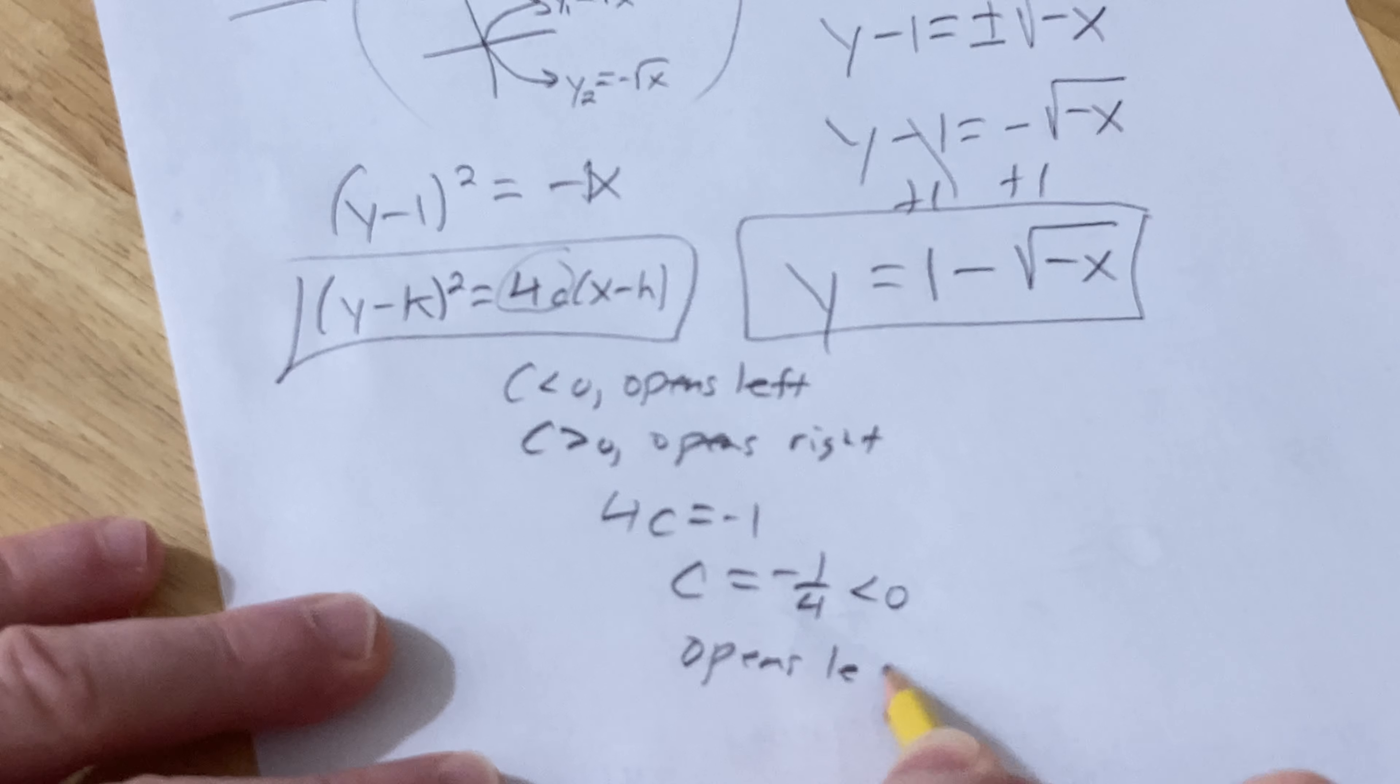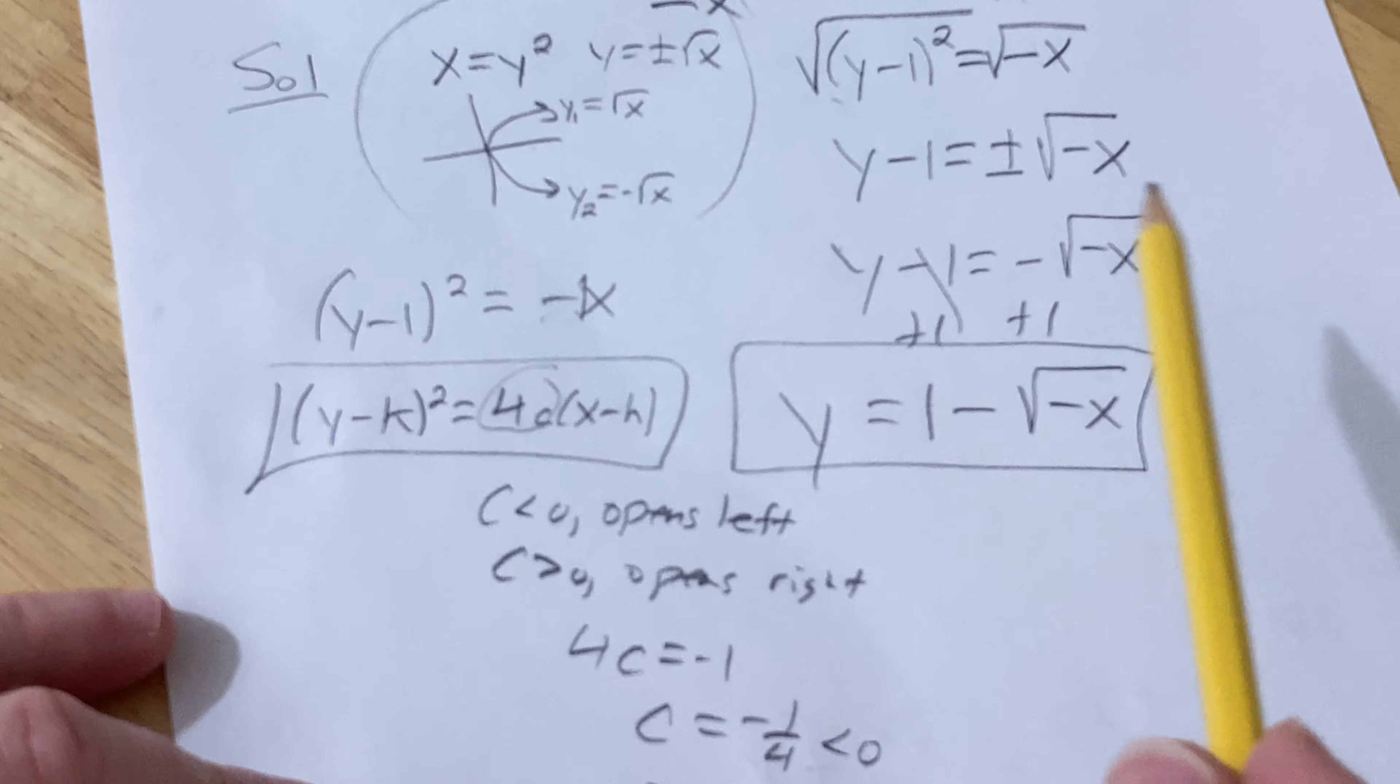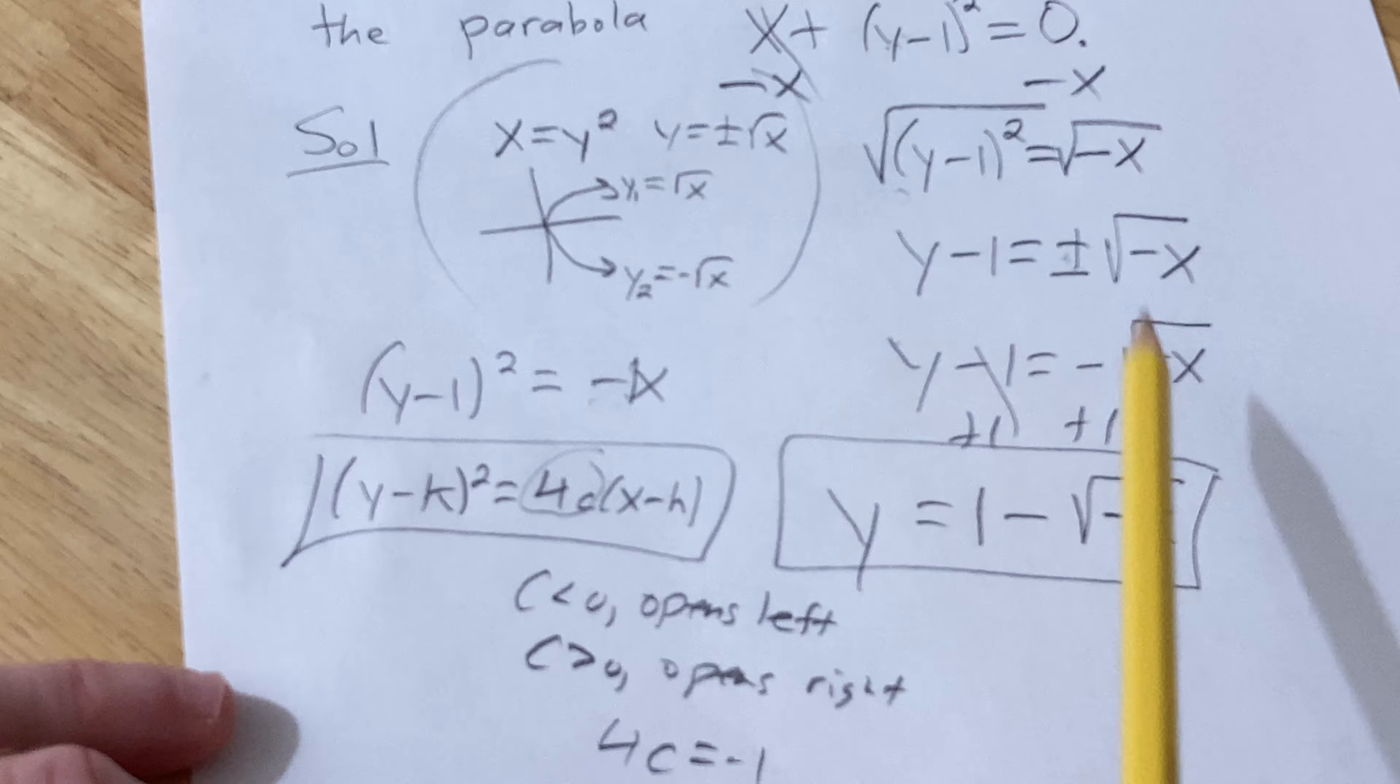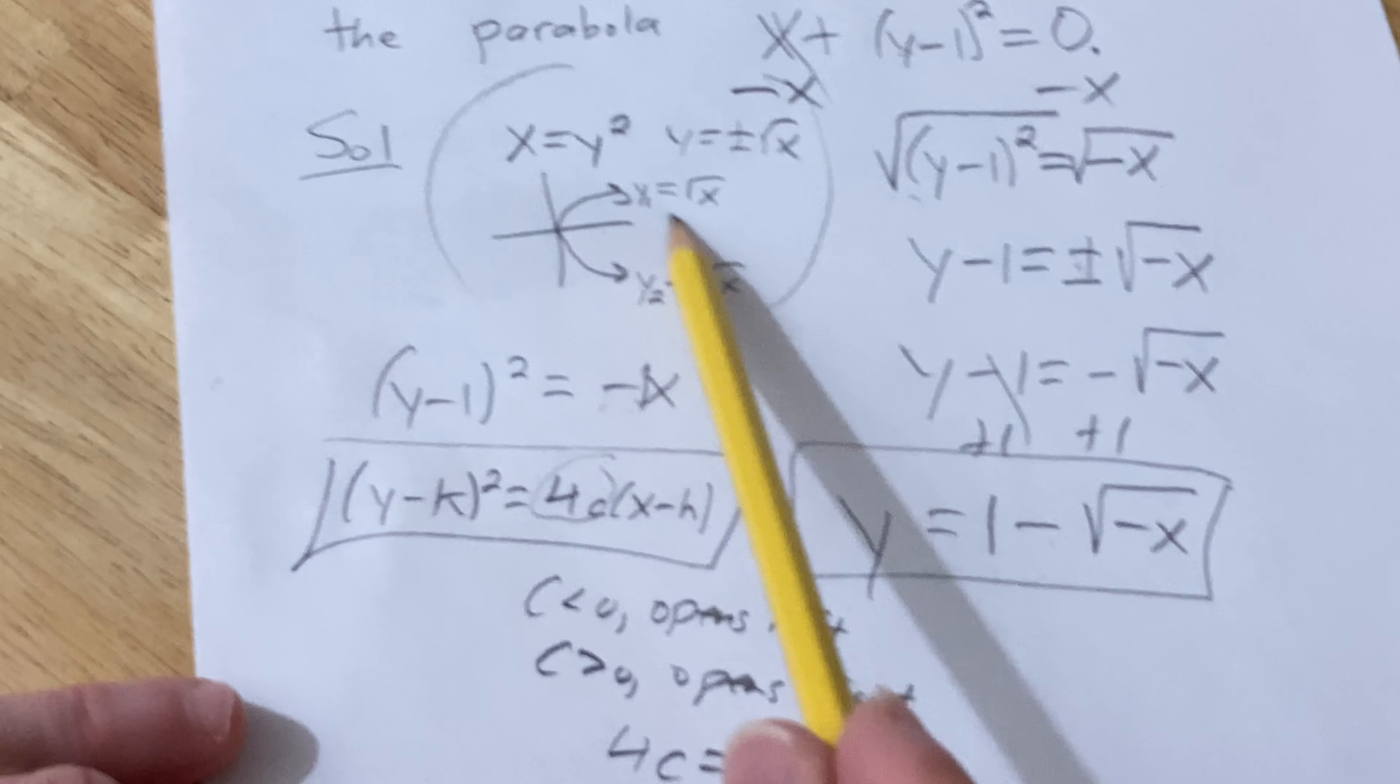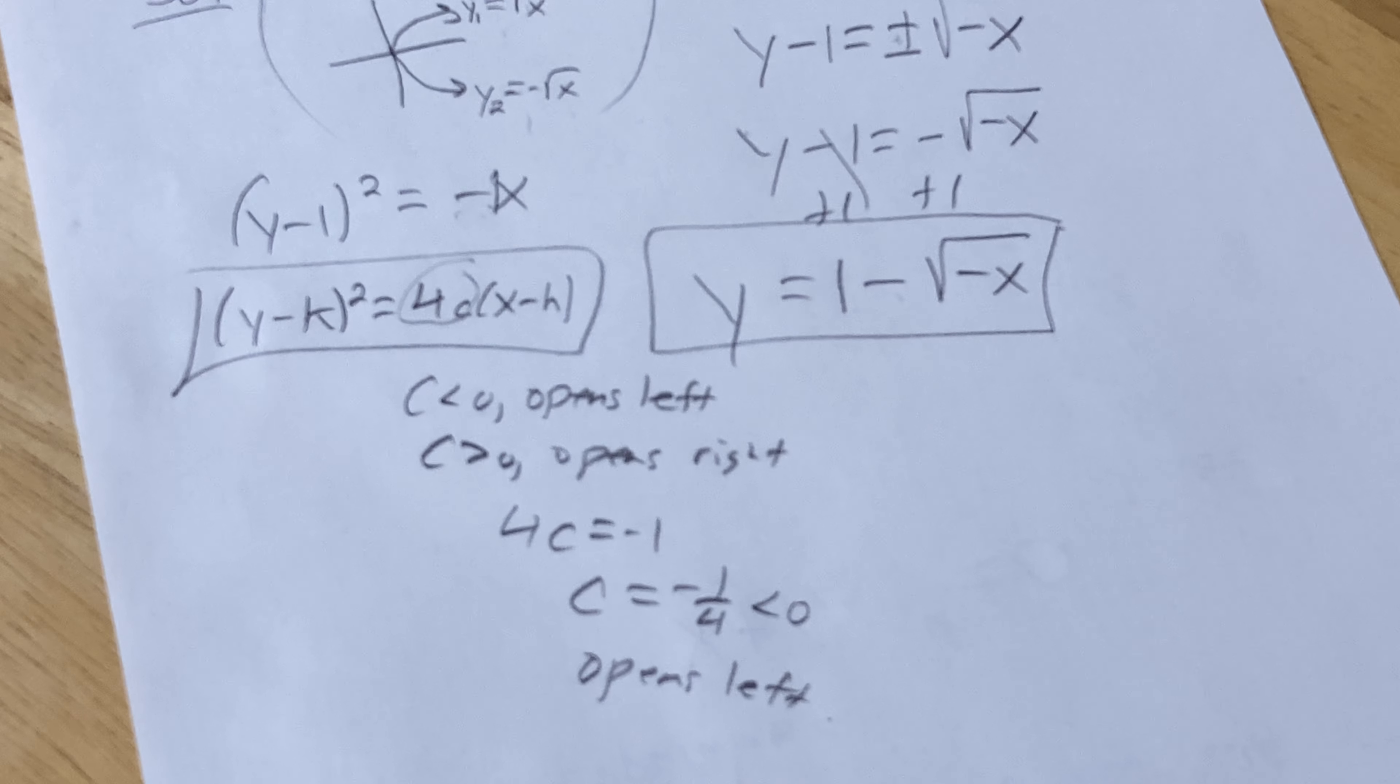But you don't need to do all that. You can just tell it opens left from the negative. And that's not even that relevant to the problem. What is relevant, though, is that the plus is going to give you the top half, and the minus is going to give you the bottom half. Just like in this simple example here. I hope this video has been helpful to someone. And good luck.